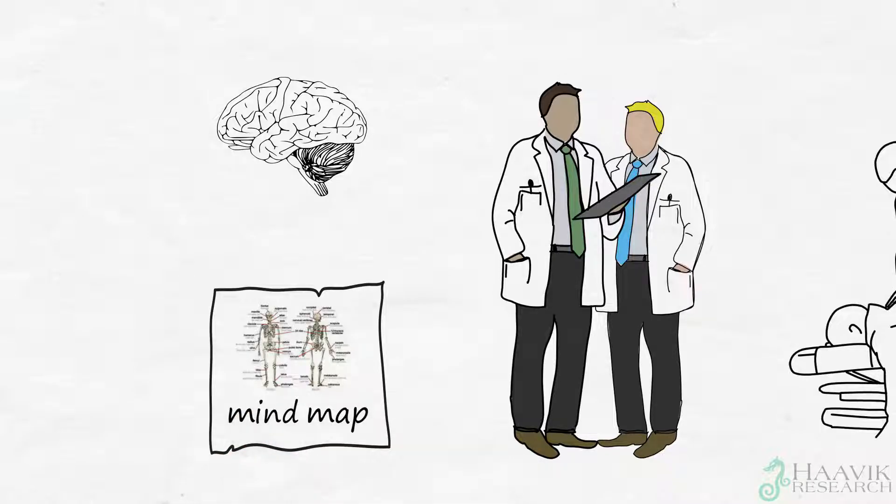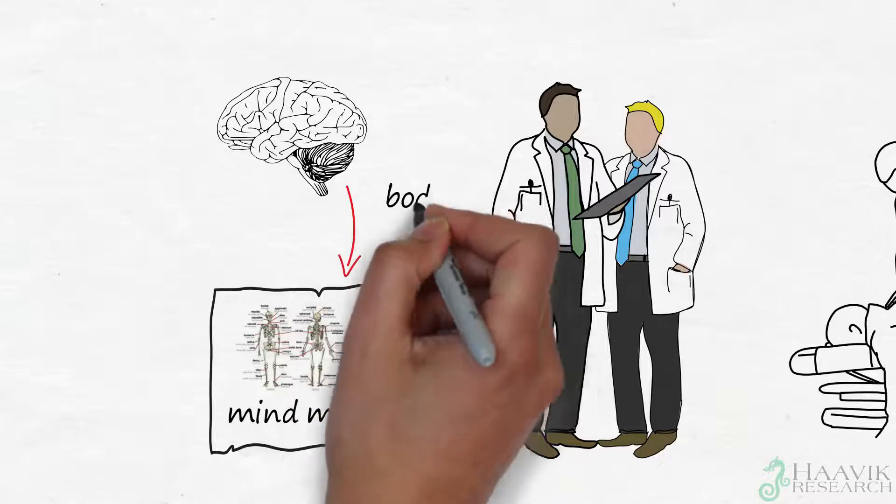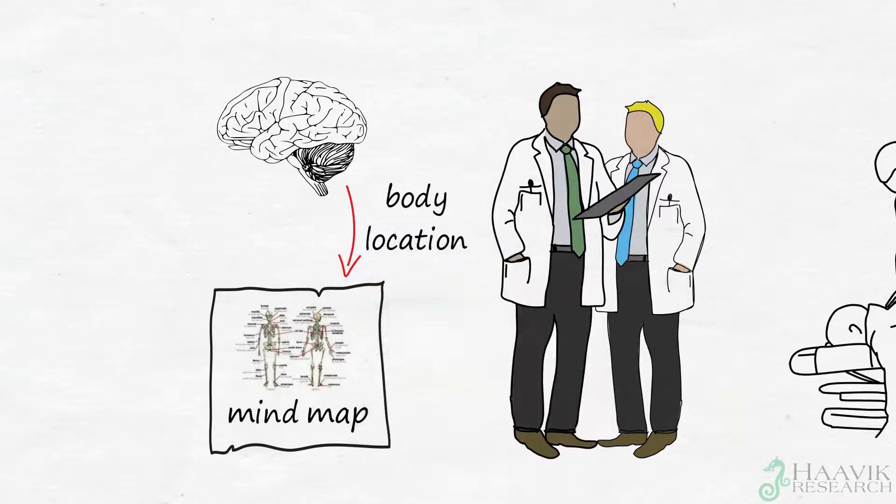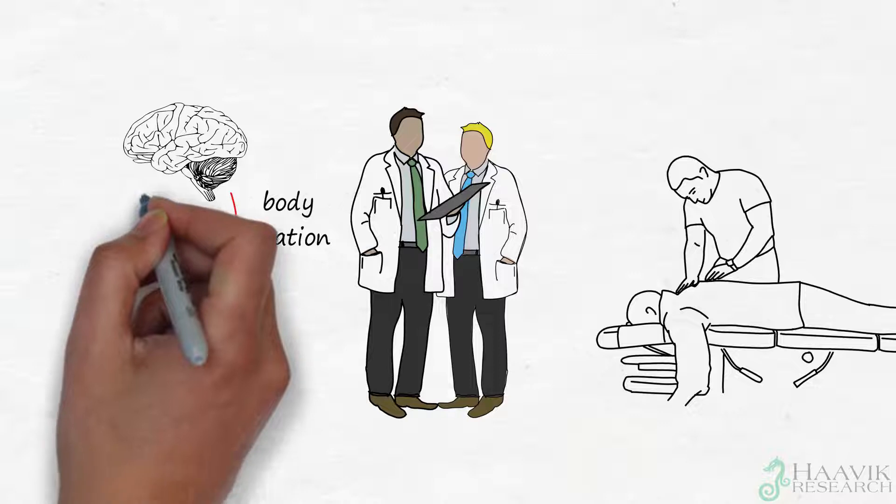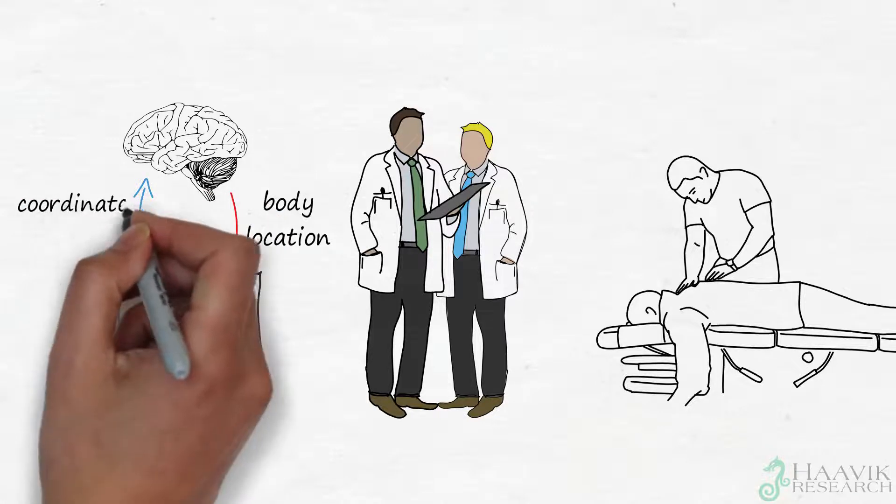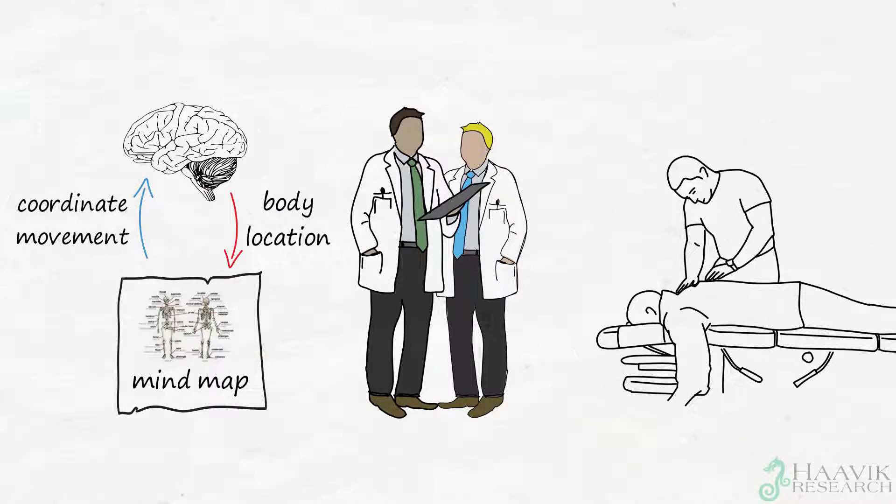And since the cerebellum is known to influence this inner brain map of the body as well, these brain scientists have specifically tested whether adjusting the spine could impact the way the cerebellum processes information, as well as the way it talks to both the perception and movement centres in the brain.